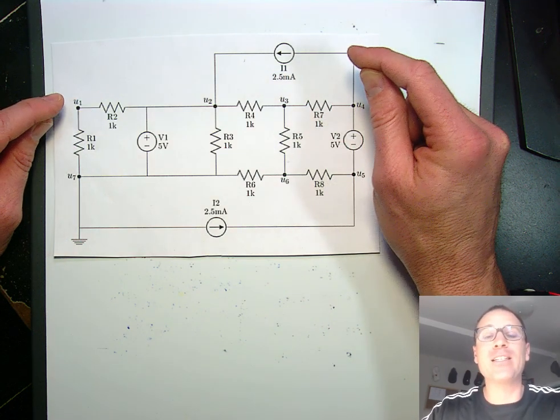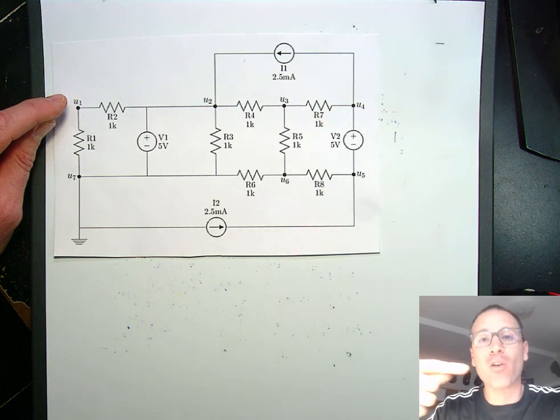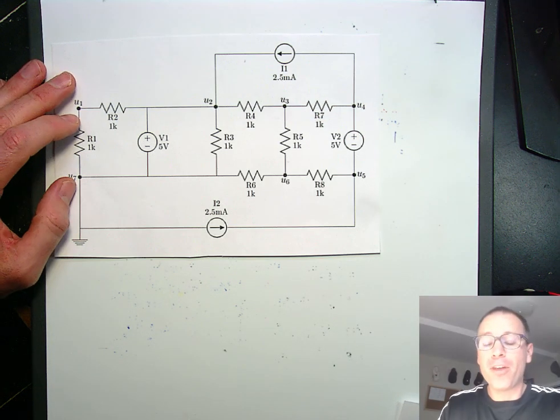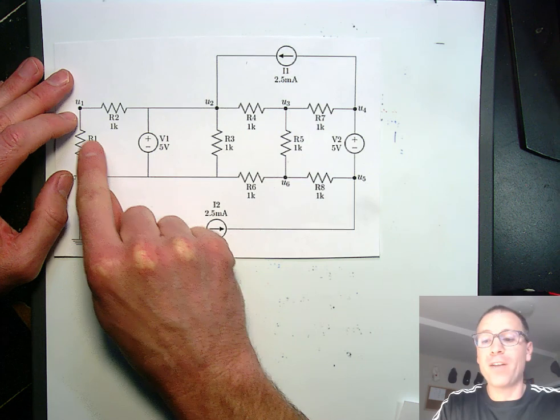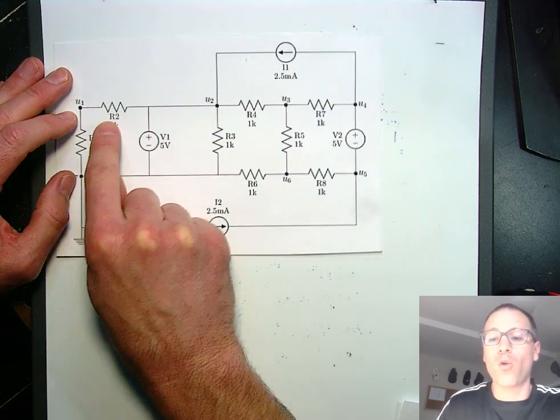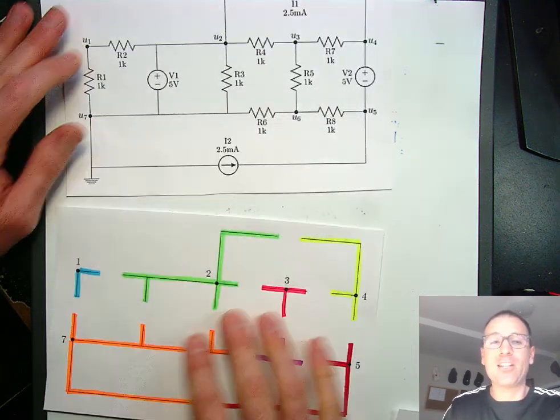The other thing that we said was that in order to identify the individual nodes of the circuits, we're going to erase each element body. In this case, when we erase each element body, we see that there are actually seven nodes.